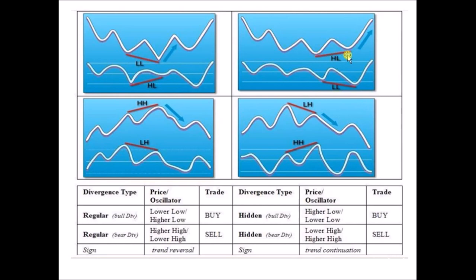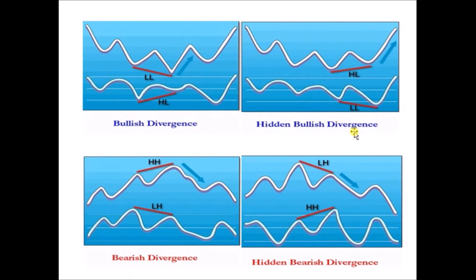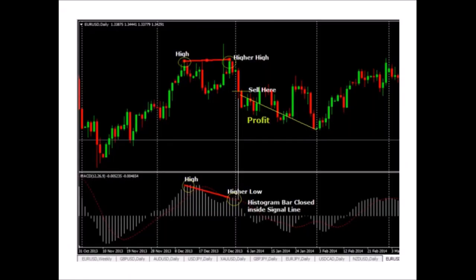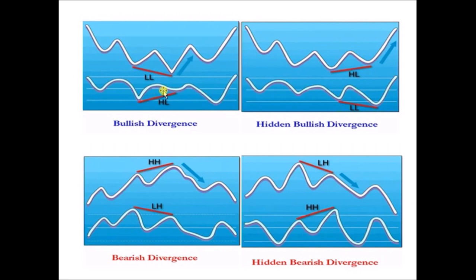For hidden divergence: we have low, higher low — bullish. We have low, lower low — bearish. Here we have high, lower high — bullish trend. We have high, higher high — bearish trend. So we have bearish, bearish, bullish, bullish. Here you can see it clearly: bullish divergence, bullish divergence, hidden divergence, bearish divergence, bearish divergence.